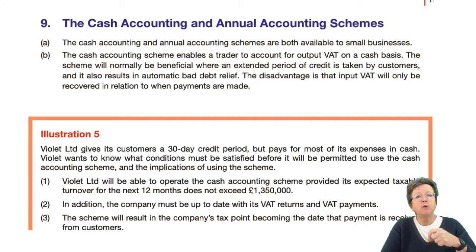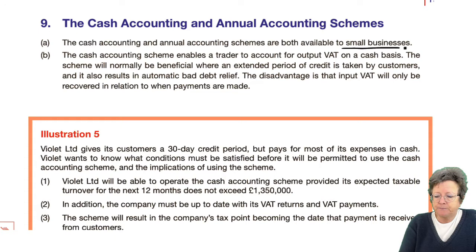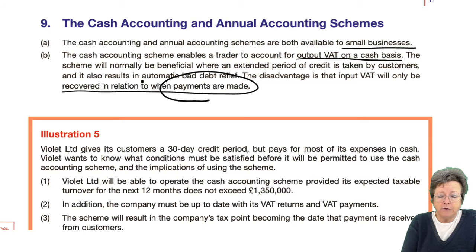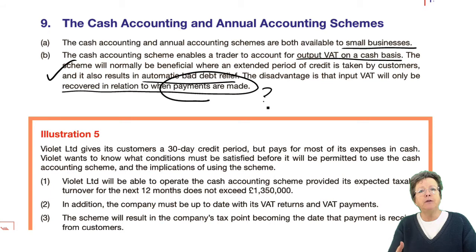We're going to look at the cash accounting and annual accounting schemes first — they're both available to small businesses. The cash accounting scheme enables a trader to account for output VAT on a cash basis. A disadvantage is you can only recover the VAT when you make payments. You do get automatic bad debt relief, which is a benefit. You account for VAT on sales when the cash is received, and when you make a payment you can record the input VAT.